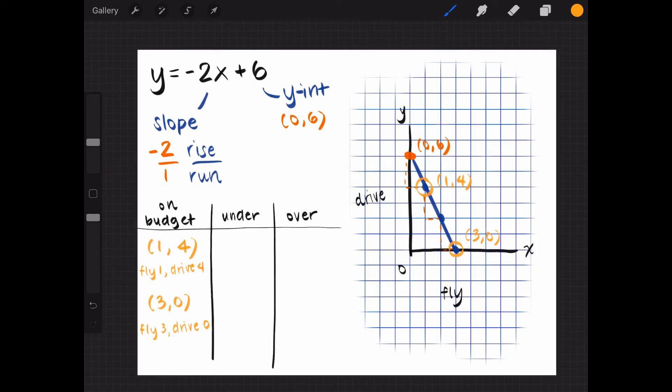We are also asked to find a combo that would be under and over her budget. For under her budget, I can pick any point underneath her budget equation, so I'll pick this point. This coordinate of 1, 2 means that if Raina chose to fly twice and drive twice, she would be under her budget and have some money left over. For over her budget, I can pick any point above her budget equation, so I'll pick this point. This coordinate of 2, 5 means that if Raina chose to fly twice and drive 5 times, she would spend more than her budgeted $600 for travel.